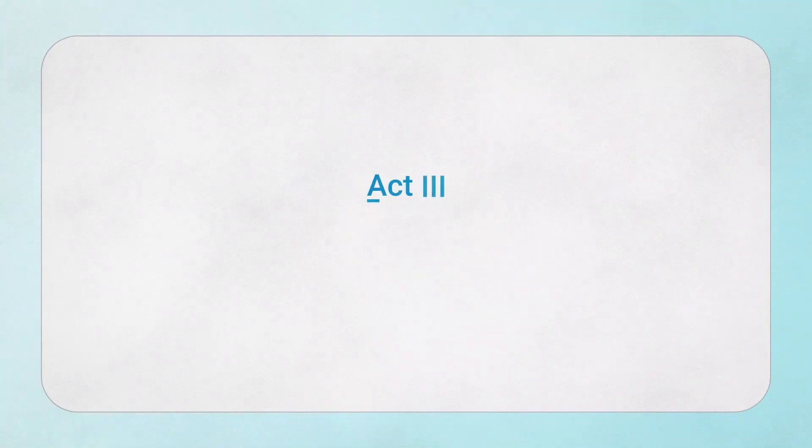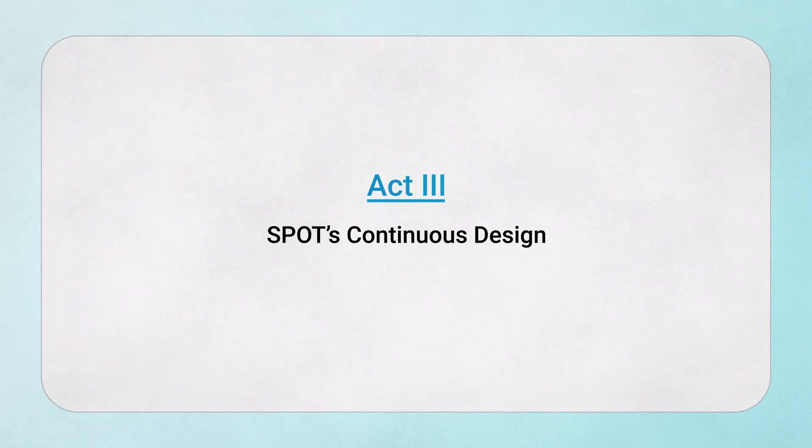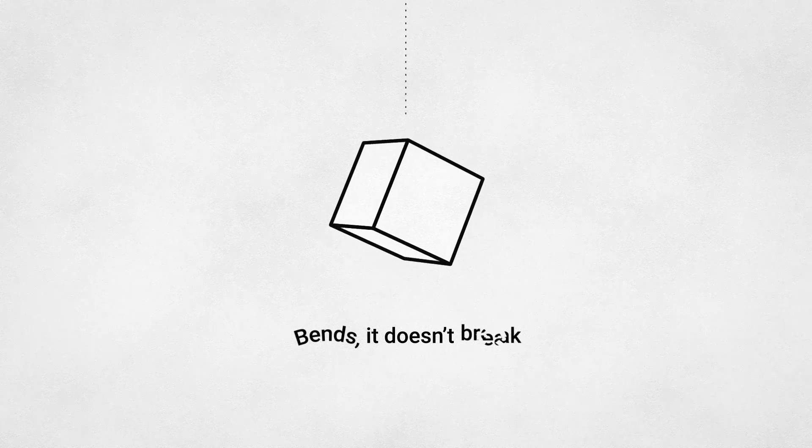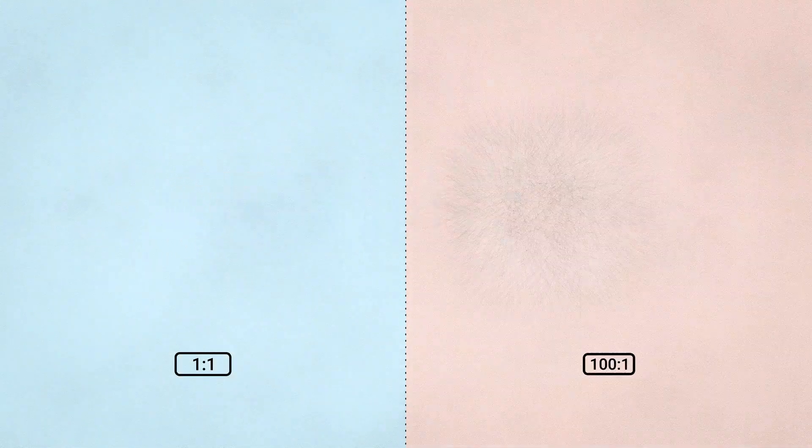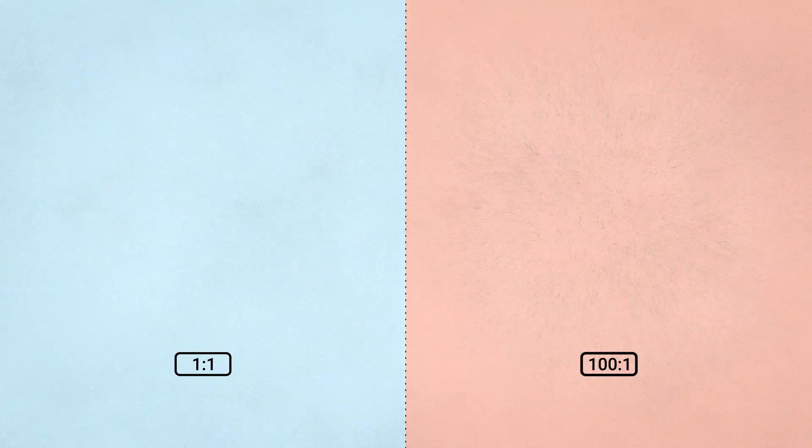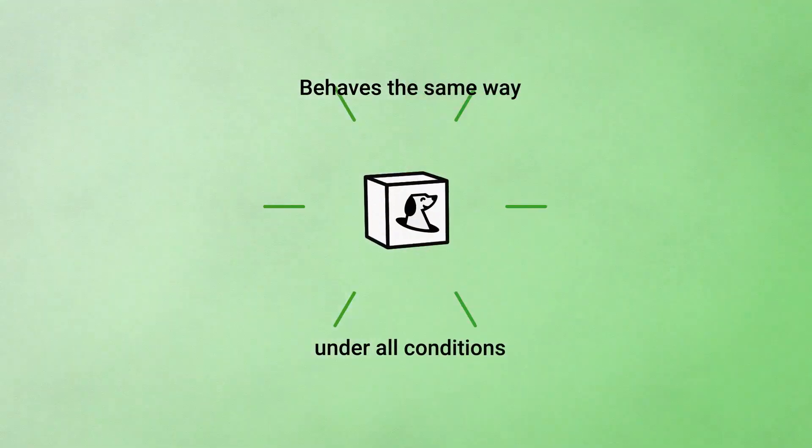Act 3. SPOT's Continuous Design. SPOT bends. It doesn't break. Rather than behaving in one way inside of a band of healthy operation and another way outside this band, the SPOT system behaves the same way under all conditions.